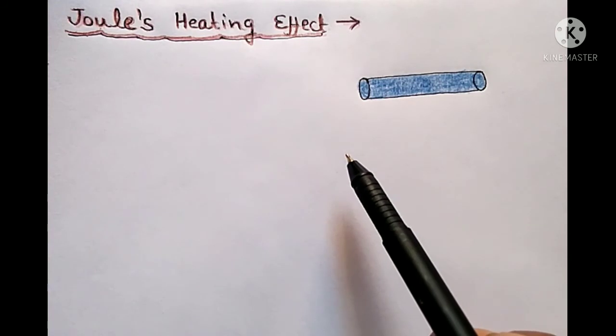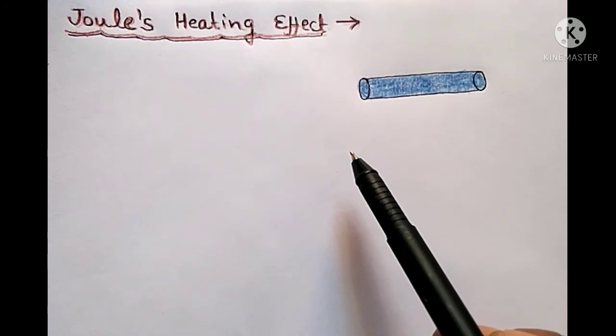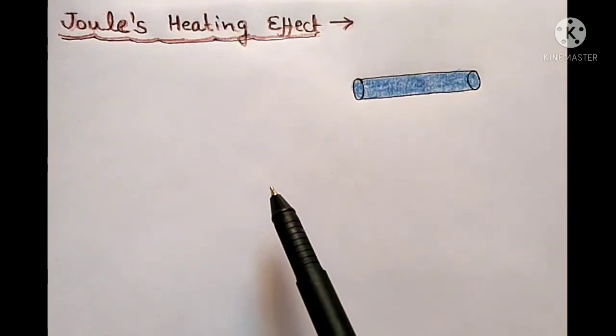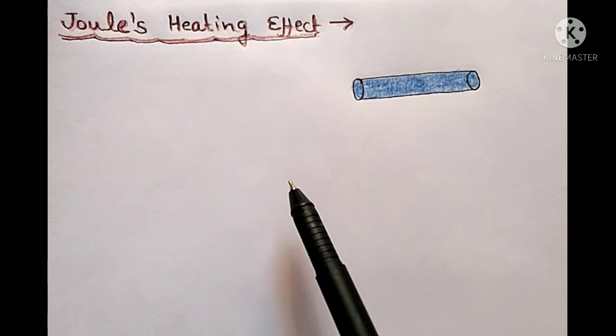This effect is also the same in case of electric bulbs. When current flows through the coils of the bulb, then the bulb glows and it radiates heat. In a nutshell, we can say that if there is a current flow through the conductor, then heat is produced.